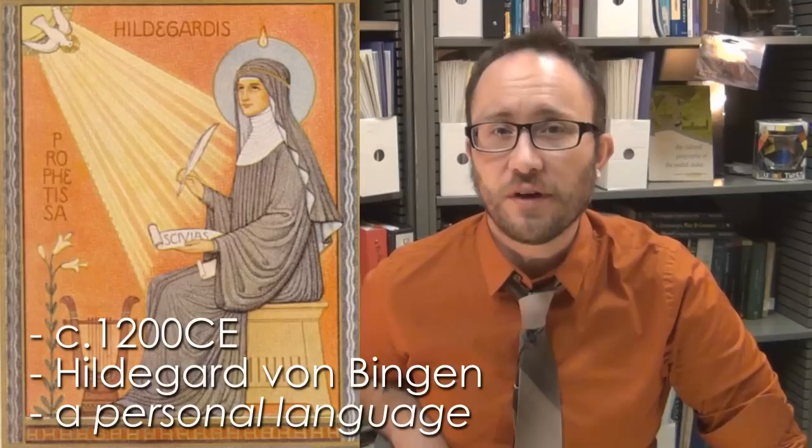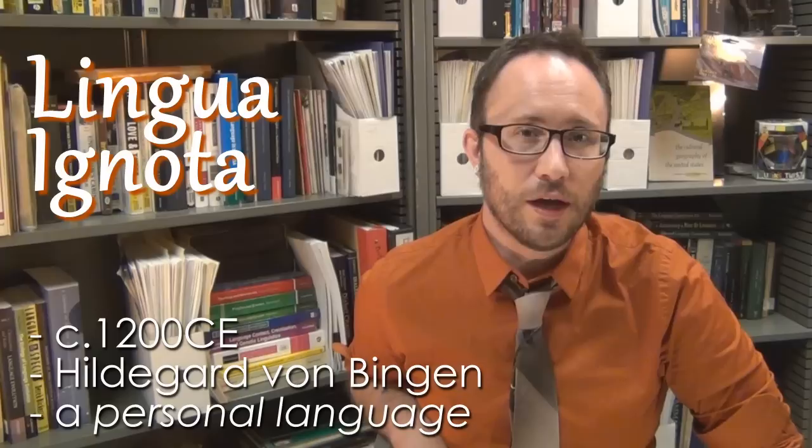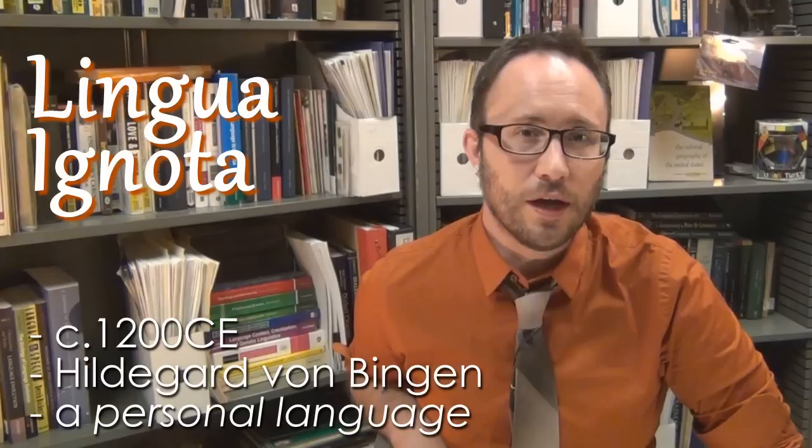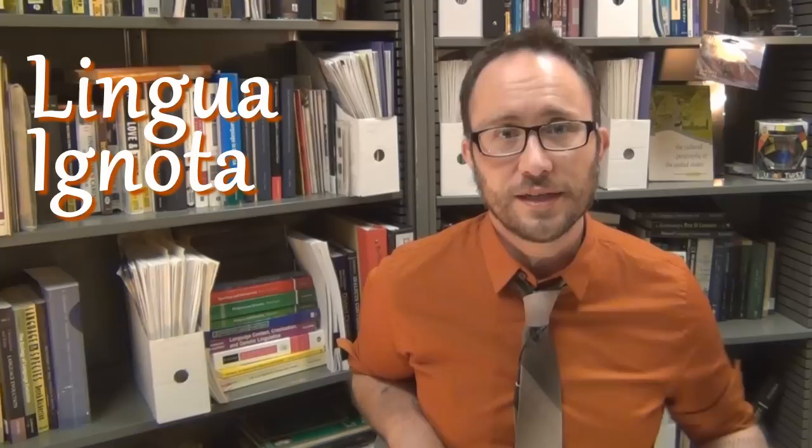The earliest evidence we have for a conlang dates to about 1200 when we find that the nun Hildegard von Bingen created the language lingua ignota. We're not quite sure what she was saying in her language because she didn't provide any translations. But we know that it wasn't a language that occurred naturally. We know that it was a conlang. She invented this language. And in fact lingua ignota in Latin means unknown language. So this is the first evidence we have of a conlang.